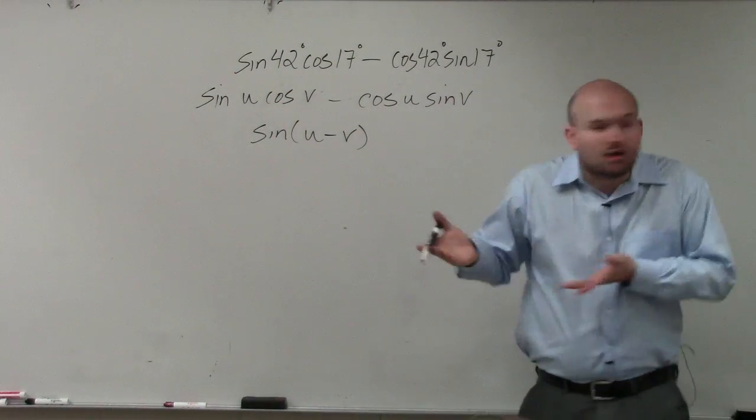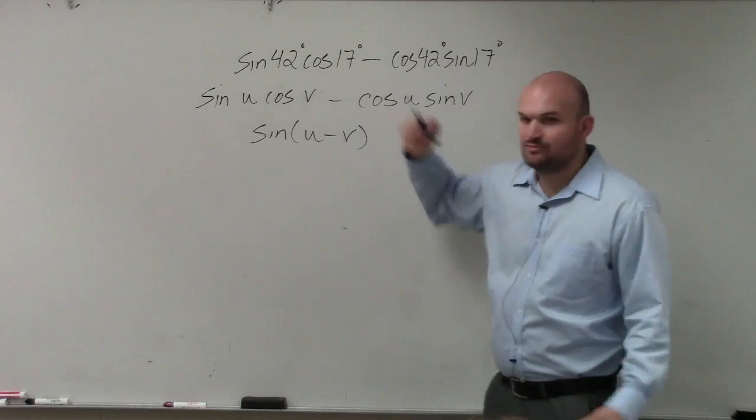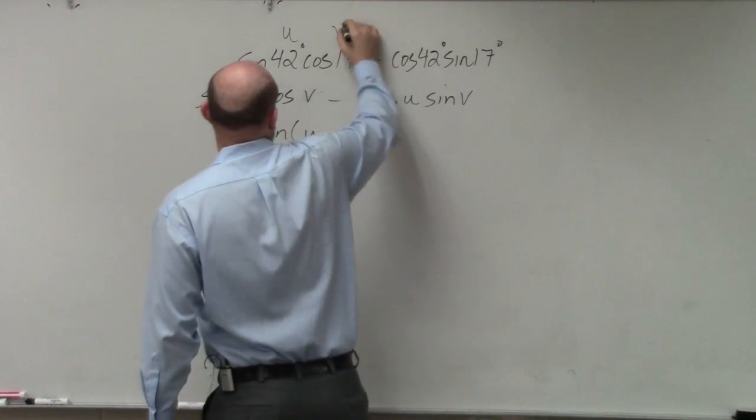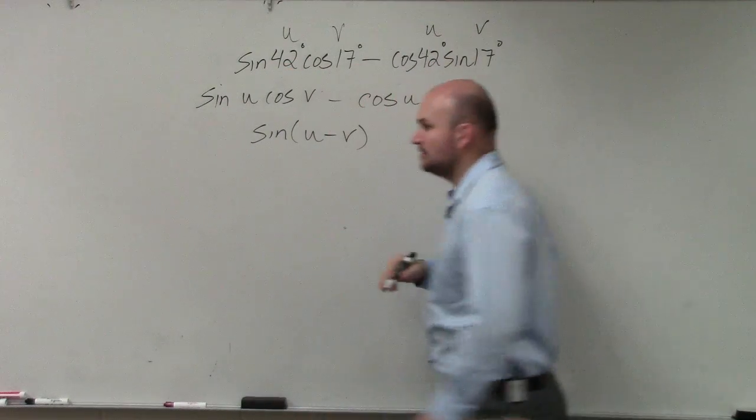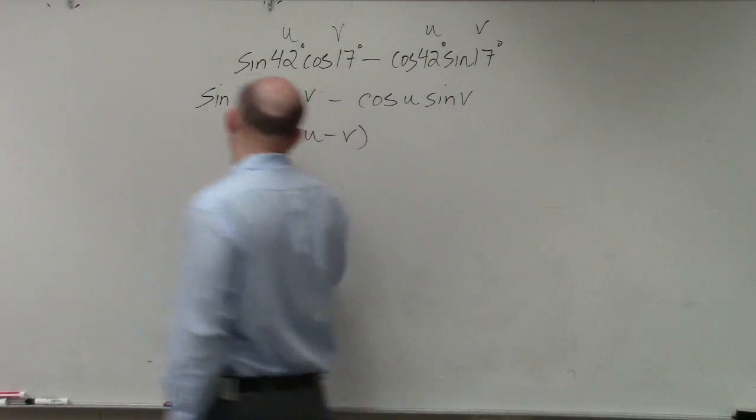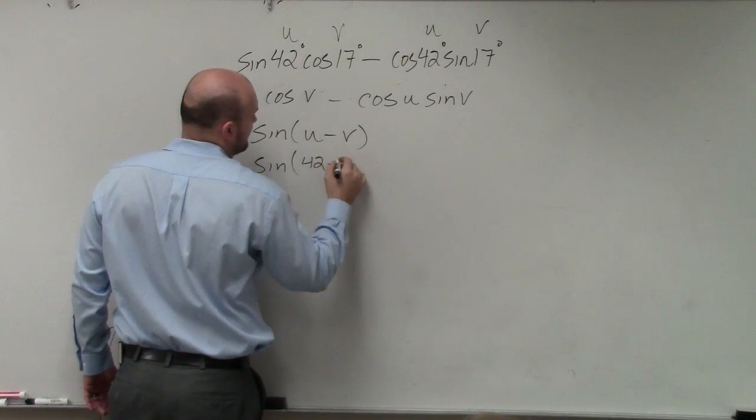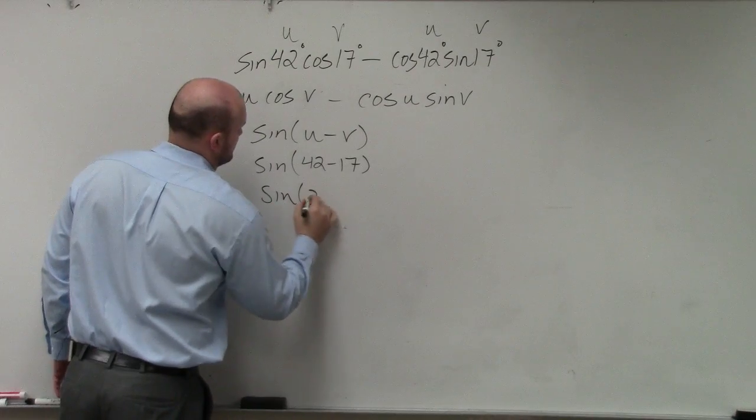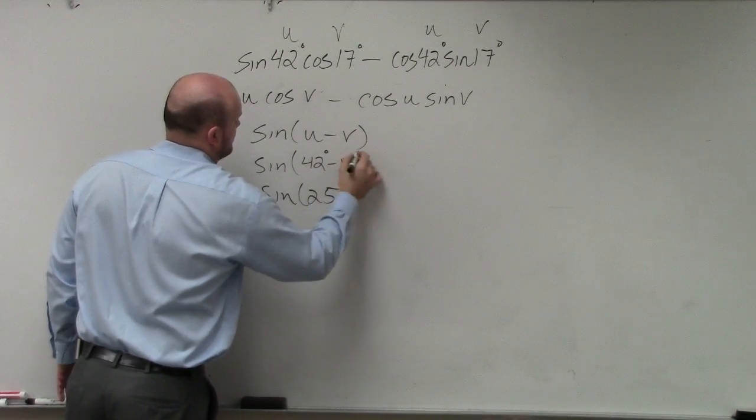Sine of u minus v. So all I simply need to do is subtract my u minus my v. Well, what's my u and what's my v? u, v. u, v. So all you had to do was do sine of 42 minus 17. Done.